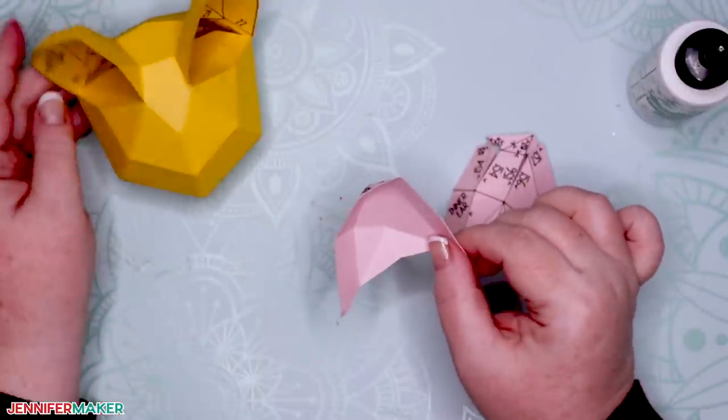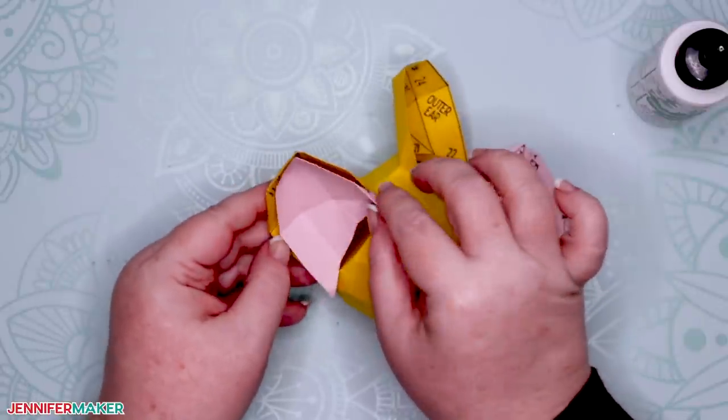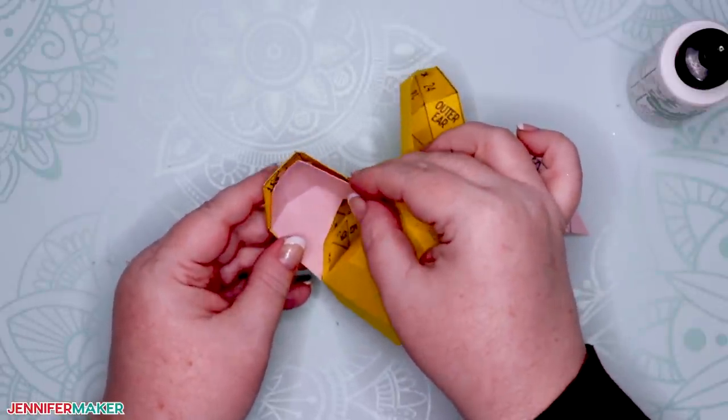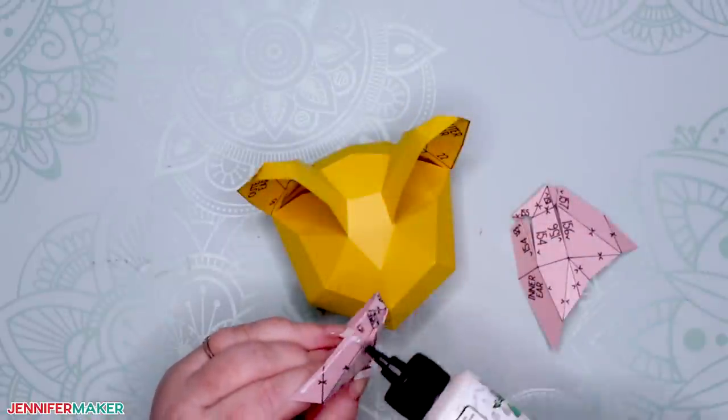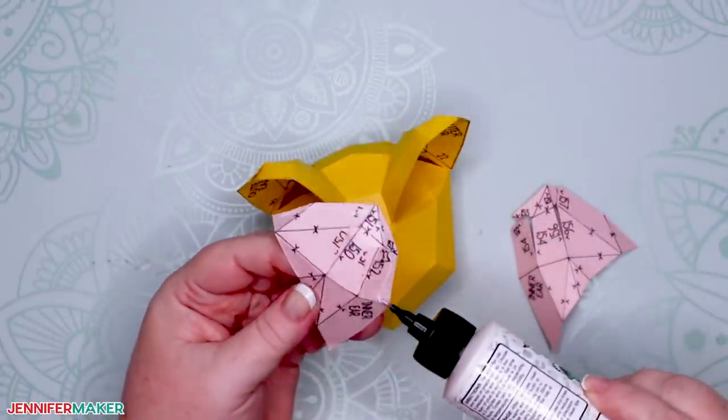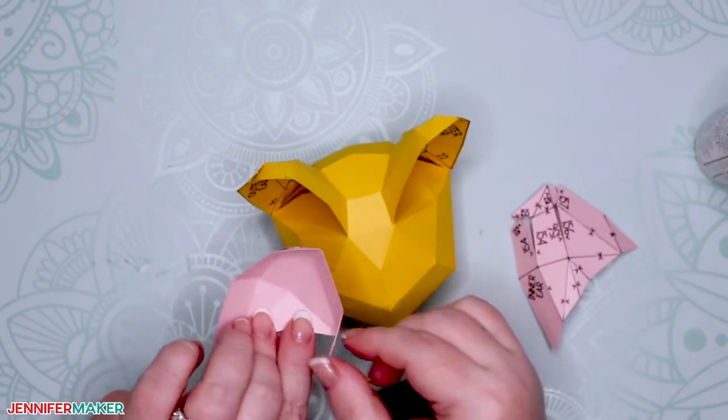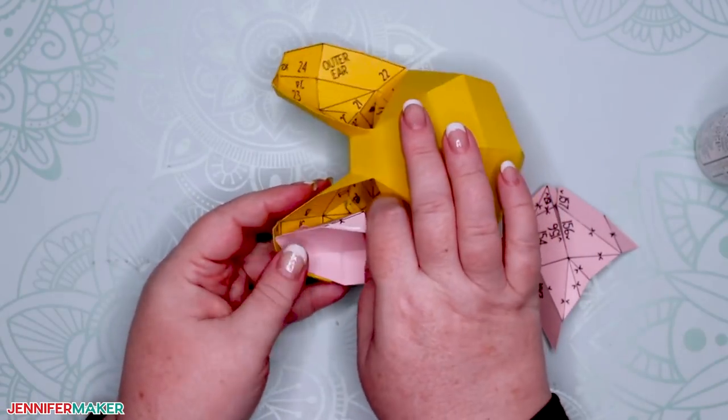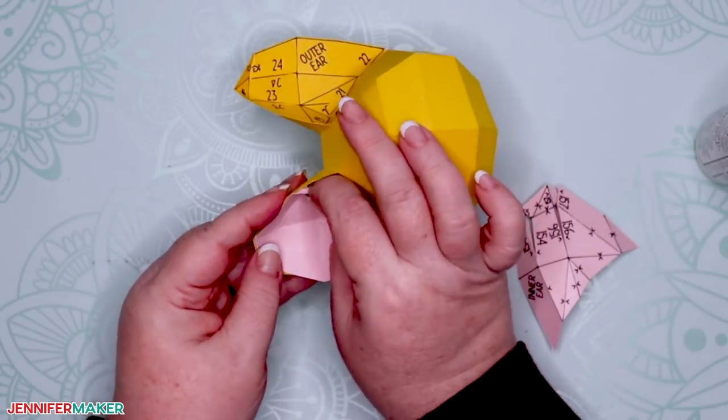When finished, the pen marking should be on the convex side of the ear with the concave side just one solid color, like this. And your inner ear should fit right into place inside your outer ears. You should put a thin line of glue around the outer edge of the inner ear, that's the side with the pen, and press it to the outer ear to keep it in place on your kitty cat.